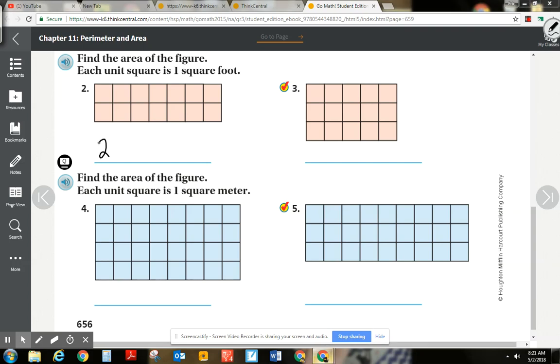This is two times one, two, three, four, five, six, seven. Two times seven equals 14 units squared.